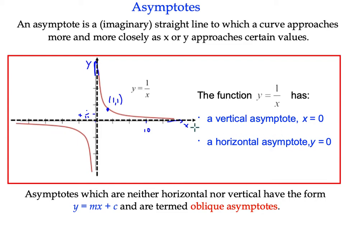There's a vertical asymptote. In this case, the equation is x equals 0. And there's a horizontal one, which is the equation y equals 0. But our asymptotes will have a unique equation depending on the function.